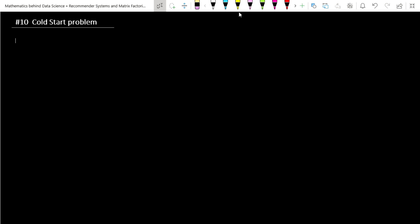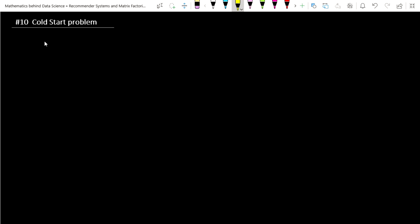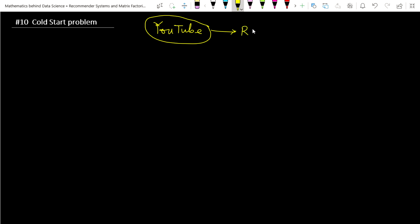So what is the cold start problem? Suppose we are interested to build a recommender system on YouTube — let's take YouTube as an example, it will be easy for us. So we are interested to build a recommender system for YouTube, that's our job.